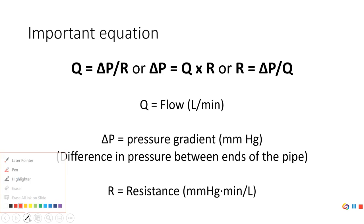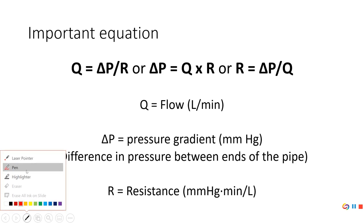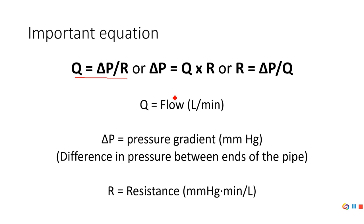Here is an equation you should get used to using. Flow equals pressure divided by resistance. Using a little algebra, we can rearrange that to: pressure equals flow times resistance, or resistance equals pressure divided by flow. Looking at the units: flow is volume per time, so liters per minute; pressure gradient is measured in millimeters of mercury; and resistance is millimeters of mercury times minutes divided by liters — that's the units, not an equation.